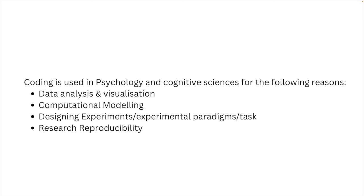There are a number of ways in which the fields of psychology and cognitive sciences more broadly use coding or programming, but some of the common ways include using it for data analysis and visualization, for computational modeling and model fitting, for designing experiments or the experimental paradigms used in research, and finally for research reproducibility. Let's dive a little further deep into each of these topics and see how coding and programming is used in the cognitive science fields across these four different areas.